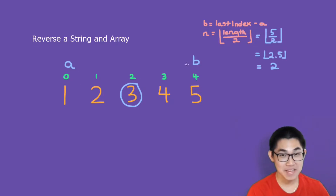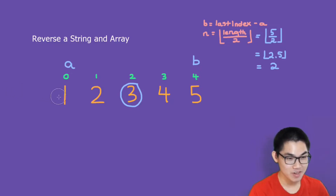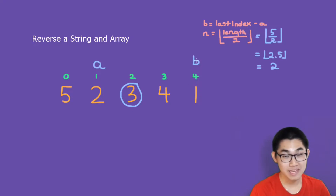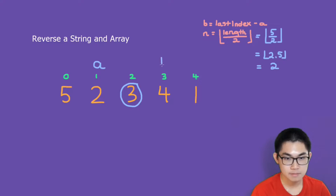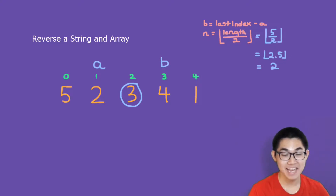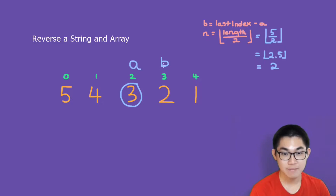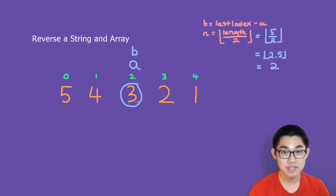A is going to tell B: hey B, let's swap these numbers. So we're going to swap 1 and 5. Then A moves forward. The formula is you take the last index, which is 4, and minus the index that A is at. A is at 1, so 4 minus 1 is 3, so B moves to 3. Then A tells B: hey B, let's swap again. So we're going to swap 2 and 4. Then A moves forward and B moves back. At this point, A is at the pin, which means we stop the algorithm — because this array is now reversed.